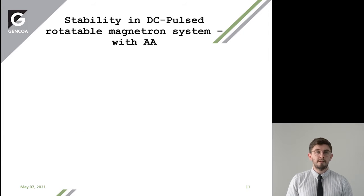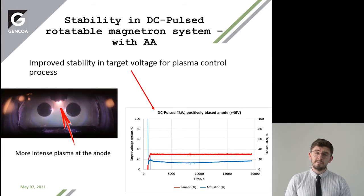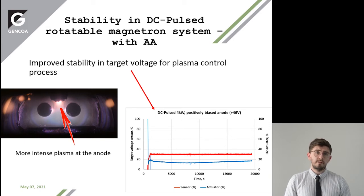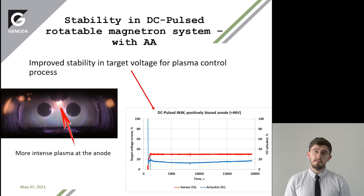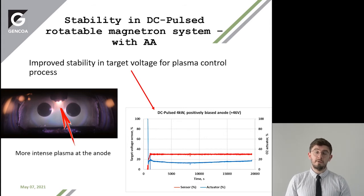With the active anode, you can see this increase in intensity where the plasma is now localized. And then you can see in the graph on the right the improved stability of the voltage on the target, followed by improvement in stability of the oxygen flow into your system.